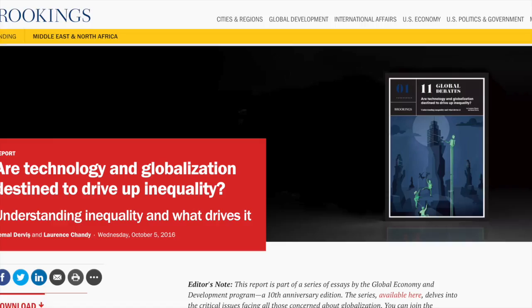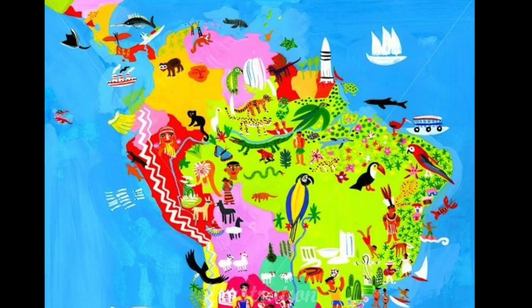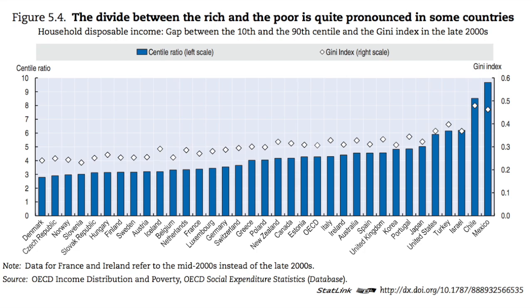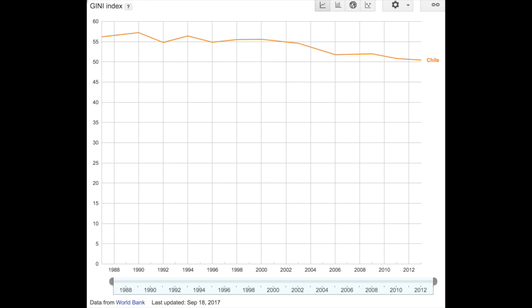However, there is one region in the world where income inequality is actually decreasing: Latin America. In order to understand the mechanisms behind this phenomenon, let's examine Chile. As this graph shows, Chile is a developed country with one of the highest income inequality rankings. This is true for both wealth and income inequality. It is also one of the few countries where income inequality is decreasing.